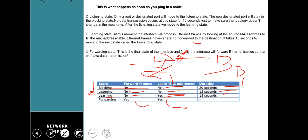We'll stop here for now. In the next lecture we'll look at the Spanning Tree lab, how it works, how we can change the Root Bridge to enable load balancing on our network, and also how we can speed up the Spanning Tree port states - since as you can see this process takes about 50 seconds before a PC gains access to the network. Thanks for watching and see you in the next video.